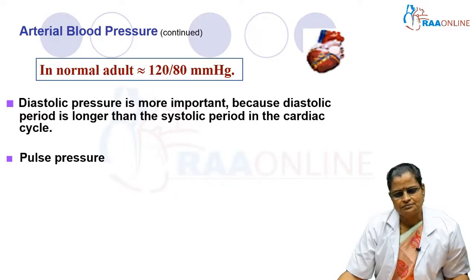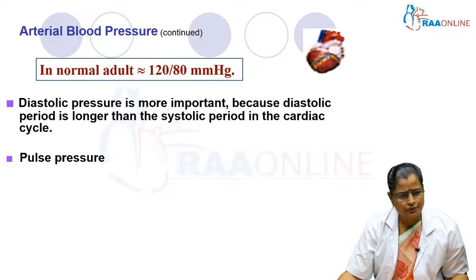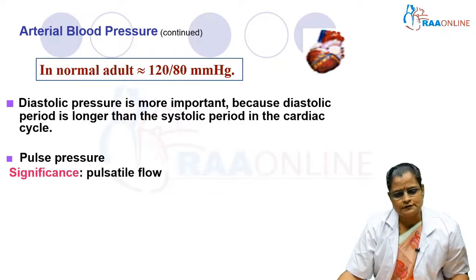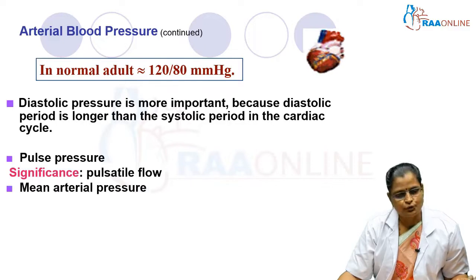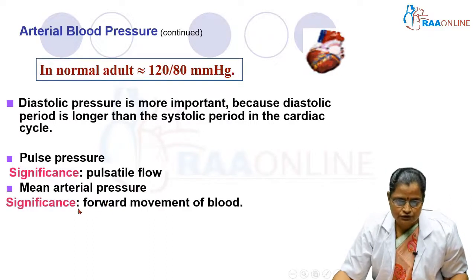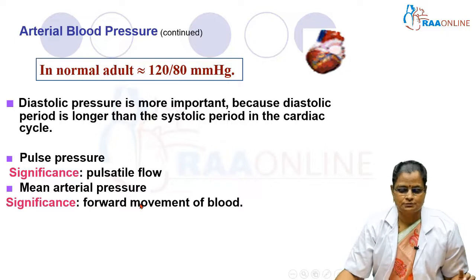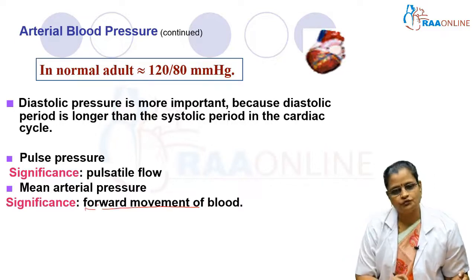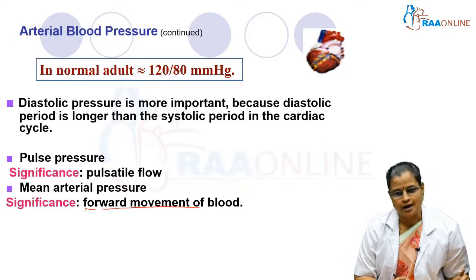Pulse pressure is the difference between systolic and diastolic blood pressure, and it is responsible for the pulsatile nature of blood flow. Mean arterial pressure is given by diastolic pressure plus one-third of pulse pressure. Its significance is that it is responsible for the forward movement of blood, which helps in tissue perfusion.